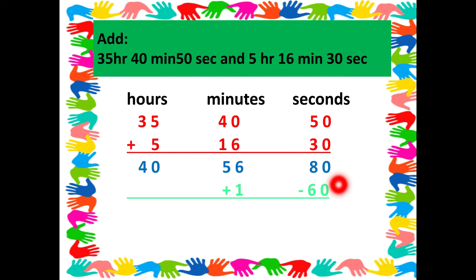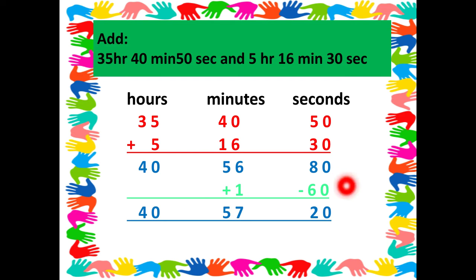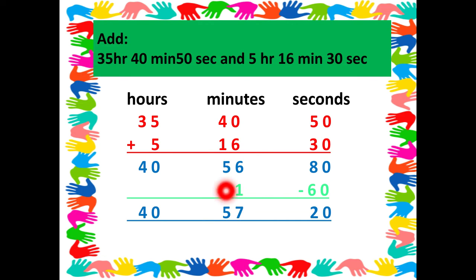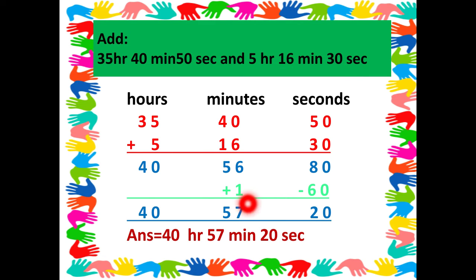After this: 80 minus 60 gives us 20 seconds; 56 plus 1 gives us 57 minutes; and 40 hours we copy as such. So in this way we have got the answer: 40 hours, 57 minutes, and 20 seconds.